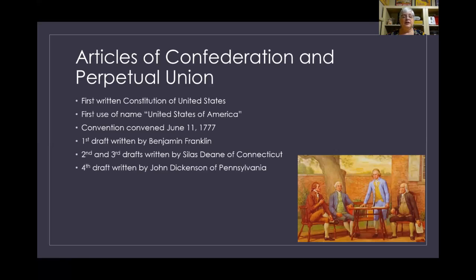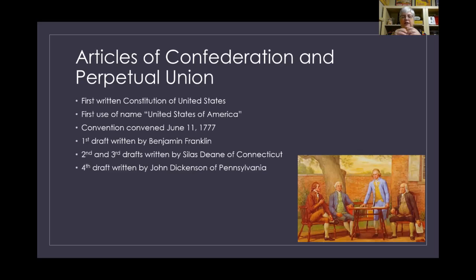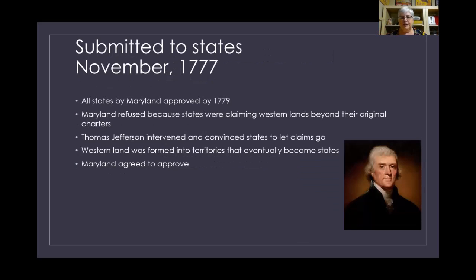The convention to write this began on June 11th of 1777. The first draft was written by Benjamin Franklin, but they didn't really go for it. The second and third drafts were written by Silas Dean from Connecticut. The fourth draft was written by John Dickinson from Pennsylvania, and that's the one that was eventually twisted and became the Articles of Confederation.